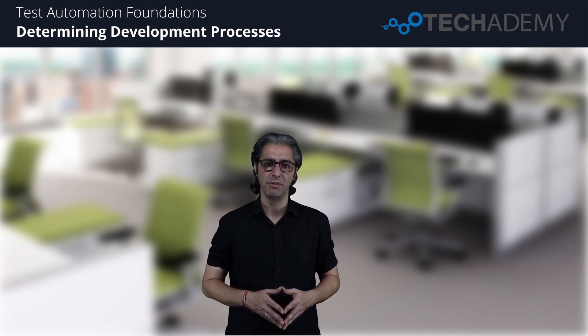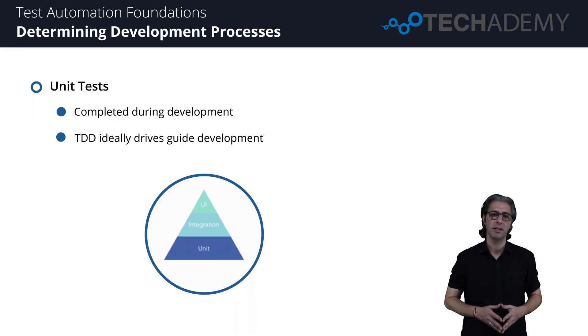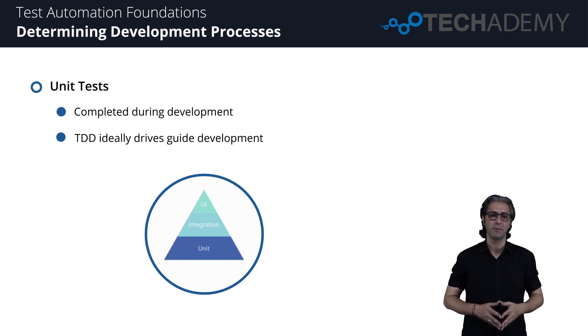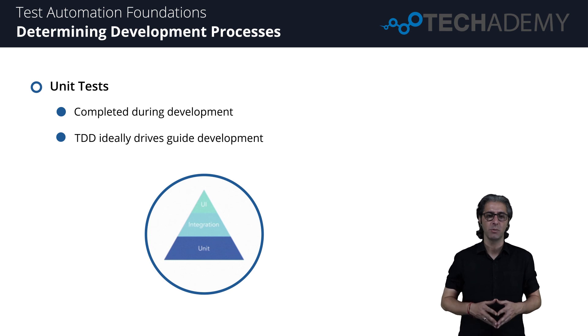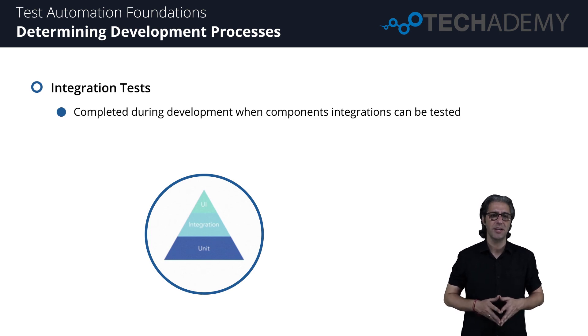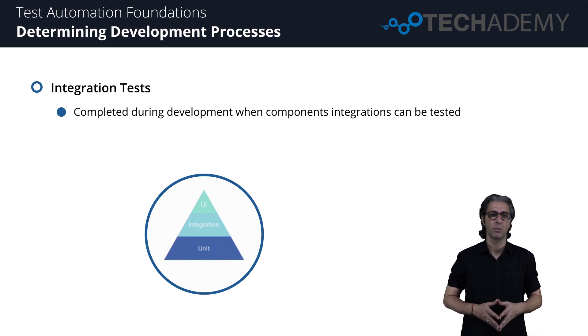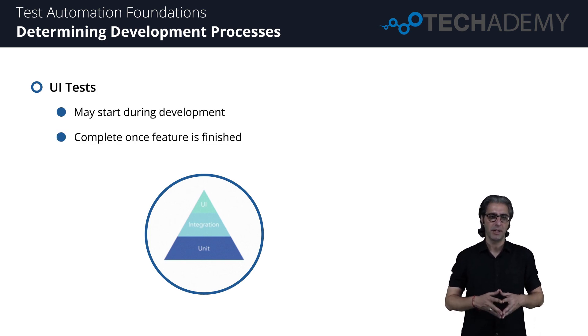Hi everybody and welcome to the session on determining development processes. Several types of tests are implemented at different points within the software delivery life cycle. With respect to writing tests: unit tests are done during development, typically using test-driven development (TDD) — writing tests before code to ensure the code works as expected. Integration tests must also be written during development, but features have to be completed enough to test components working together. UI testing may start during development but can only be completed when the feature is finished.